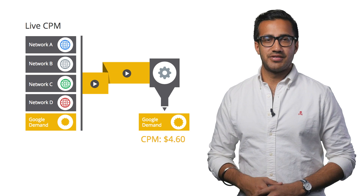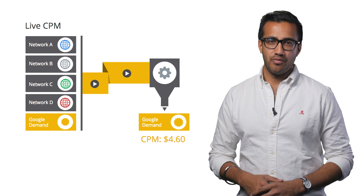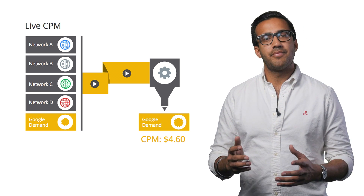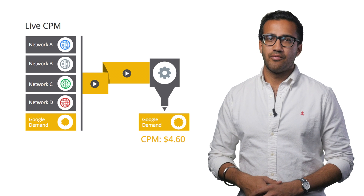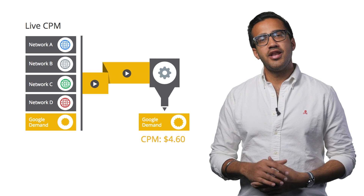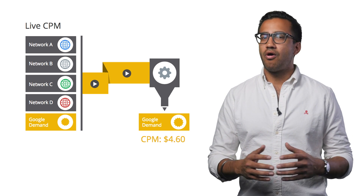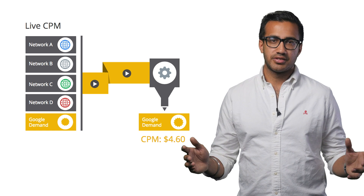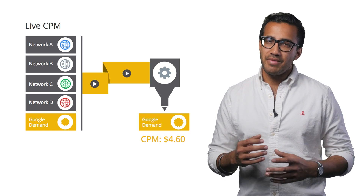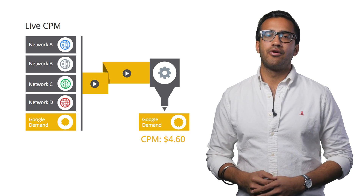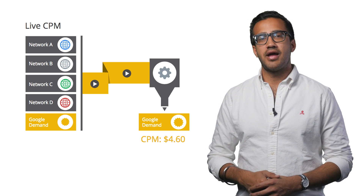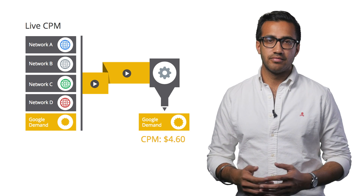To ensure that AdMob is properly competing within your mediation stack, we also created the Optimize AdMob Network feature. In AdMob Mediation, you can enable Google's demand to bid alongside all of your other networks on a per-impression basis. That means for every ad request, if AdMob is able to serve an ad at a higher CPM than the other networks, it will.